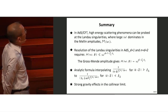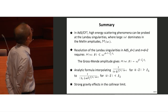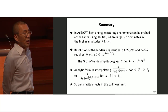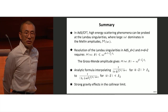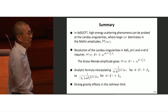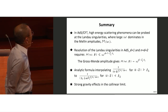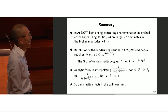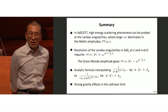In summary: in the context of ADS-CFT correspondence, high-energy scattering phenomena can be probed at the Landau singularity, where large omega dominates in the Mellin amplitude. The resolution of the Landau singularity in ADS_{d+1} with d plus two point amplitude requires a universal bound — that is the meaning of the title. Gross-Mende behavior satisfies this bound with a margin of one. We found an analytic formula in terms of confluent hypergeometric functions that nicely interpolates between bulk point singular behavior and smooth ultraviolet behavior. Strong gravity effects dominate in the collinear limit.